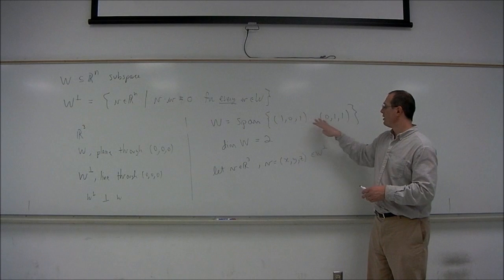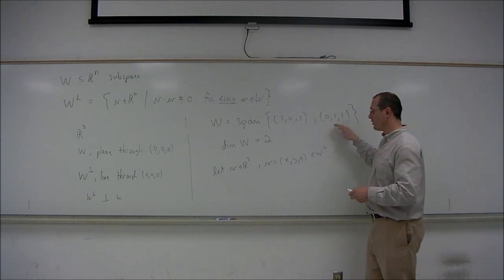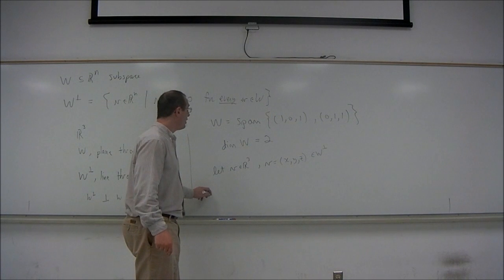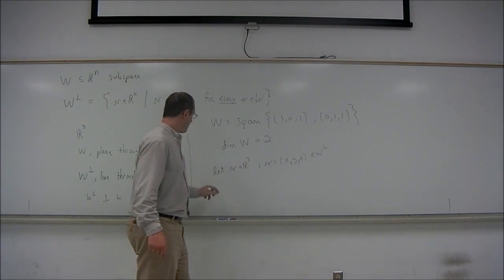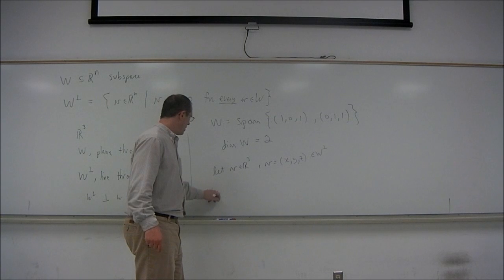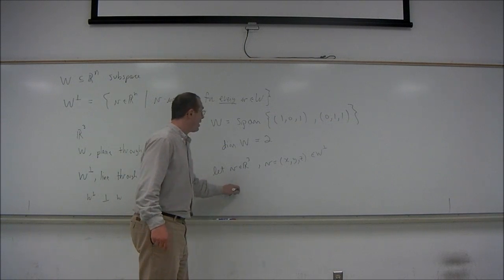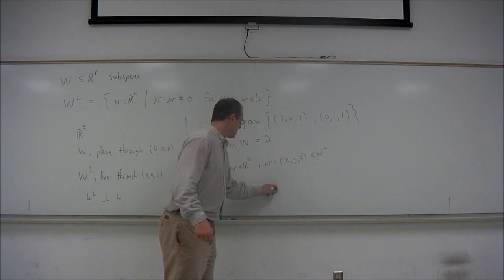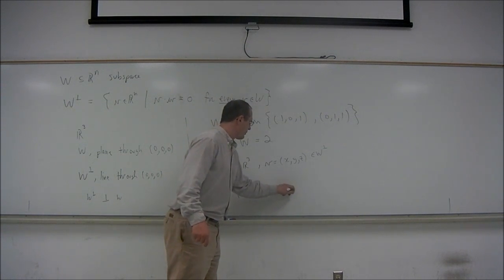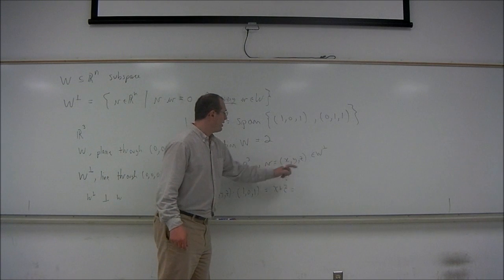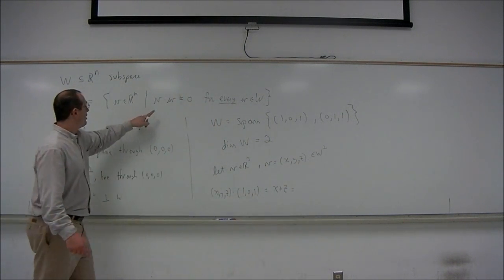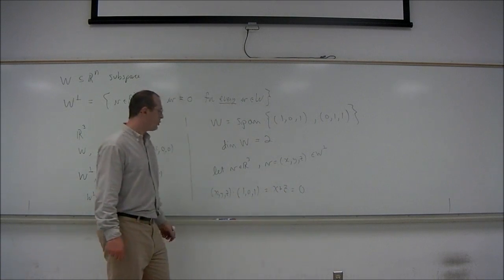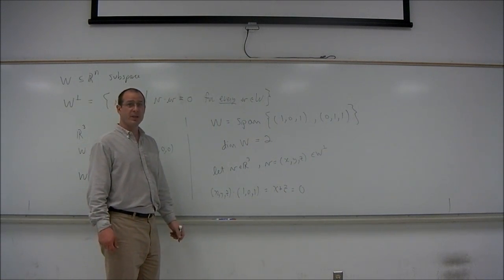It's sufficient for V to be perpendicular to the basis vectors. Let's calculate what would V dot the first basis vector be. That would be (X, Y, Z) dot (1, 0, 1), which equals X plus Z. If we want (X, Y, Z) to be in the orthogonal complement, then that dot product should be 0. So we get the equation X plus Z equals 0.